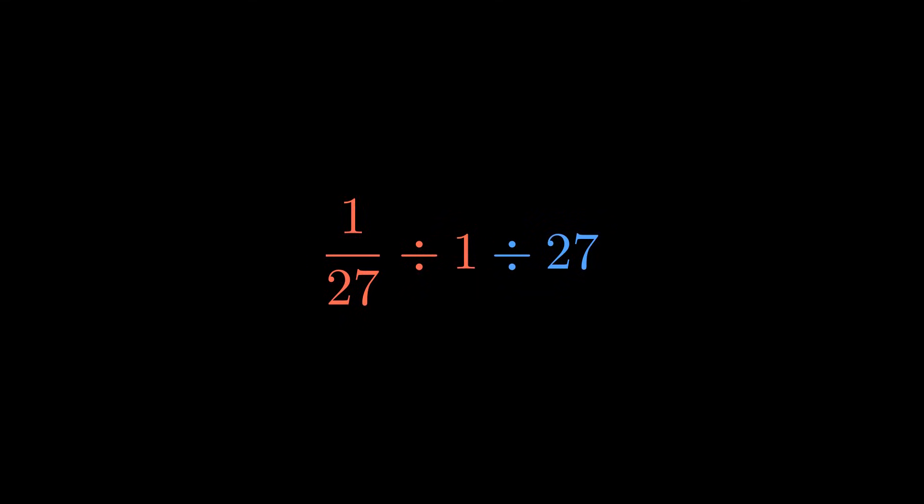Moving to the next operation, we divide this by 1, which obviously doesn't change anything. So we're left with one final division.